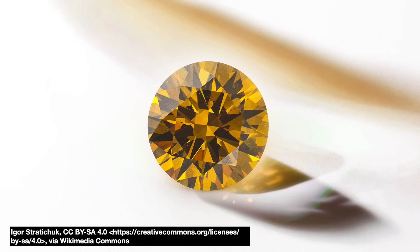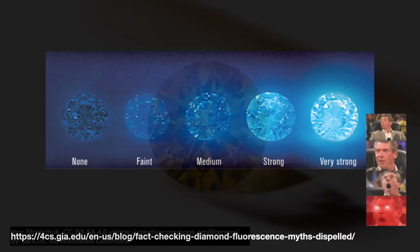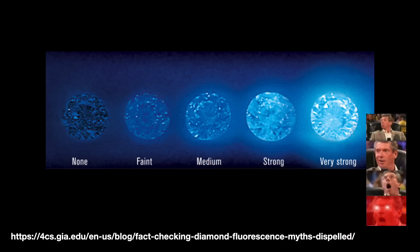And they give diamonds their nice colors. For example, high concentrations of nitrogen atoms make the diamond yellow. Color centers are also why some diamonds can glow or fluoresce when exposed to UV light.